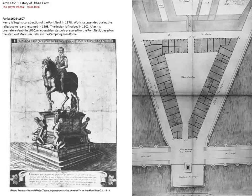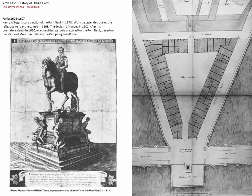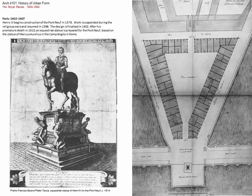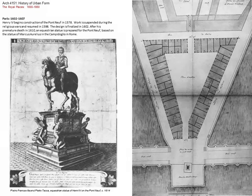Henry IV begins construction in 1578. Work is suspended during the religious wars and resumed 20 years later in 1598. The design is finalized in 1602. The king himself did not build this — he actually turned it over to one of his ministers, his finance minister, a man named Achille de Harlay. Harlay acted as a developer, a real estate developer. The land was given by the king, the royal treasury kicked in some money, and he got some other investments and tried to pre-sell some of the units — never very successful.